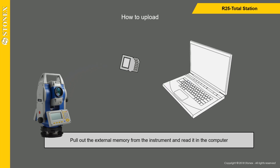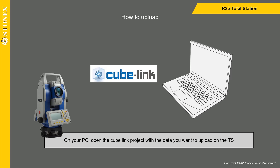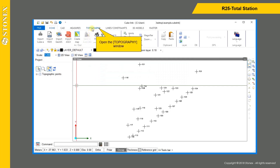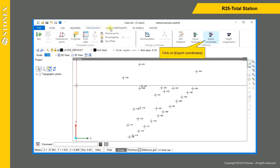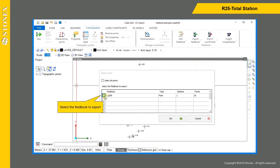Pull out the external memory from the instrument and read it on the computer. On your PC, open the CubeLink project with the data you want to upload. Open the topography window, click on Export Coordinates, select the instrument model, select the field book to export, and press OK.